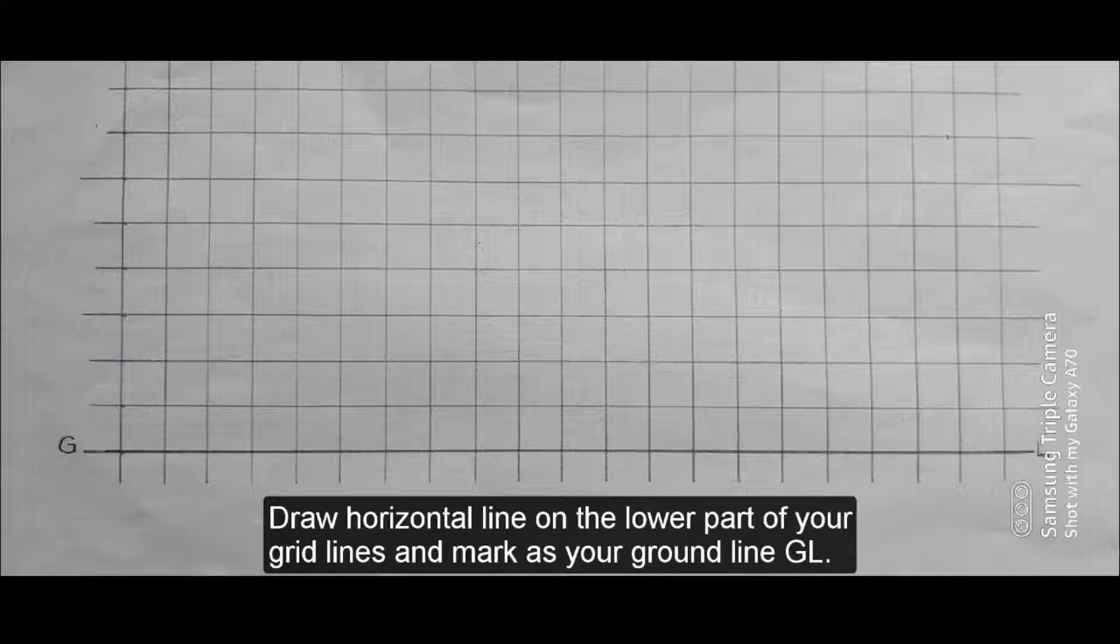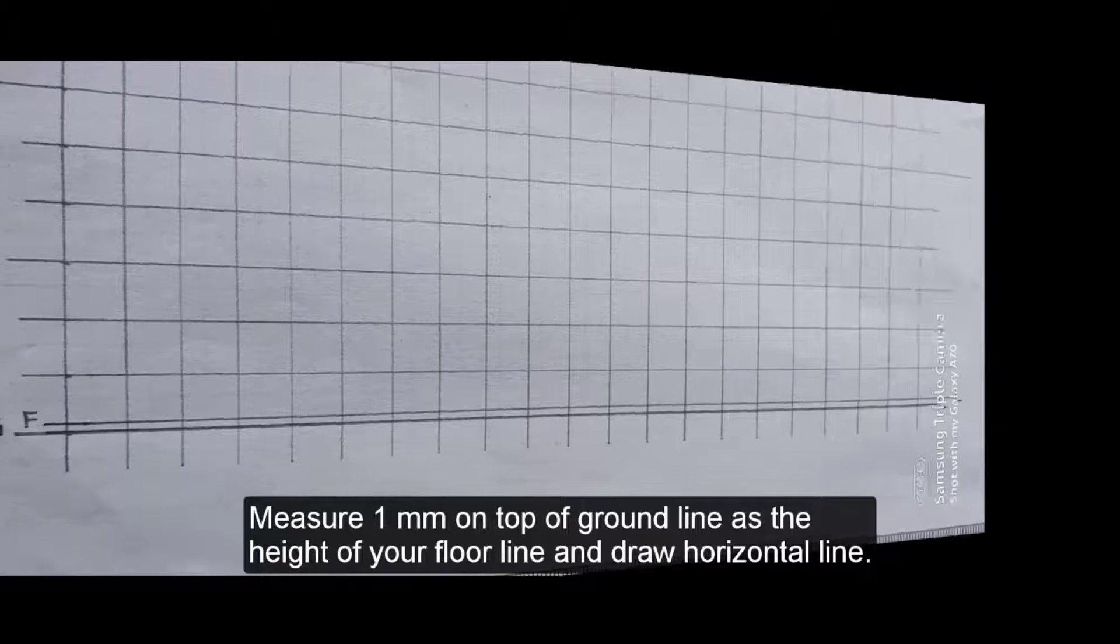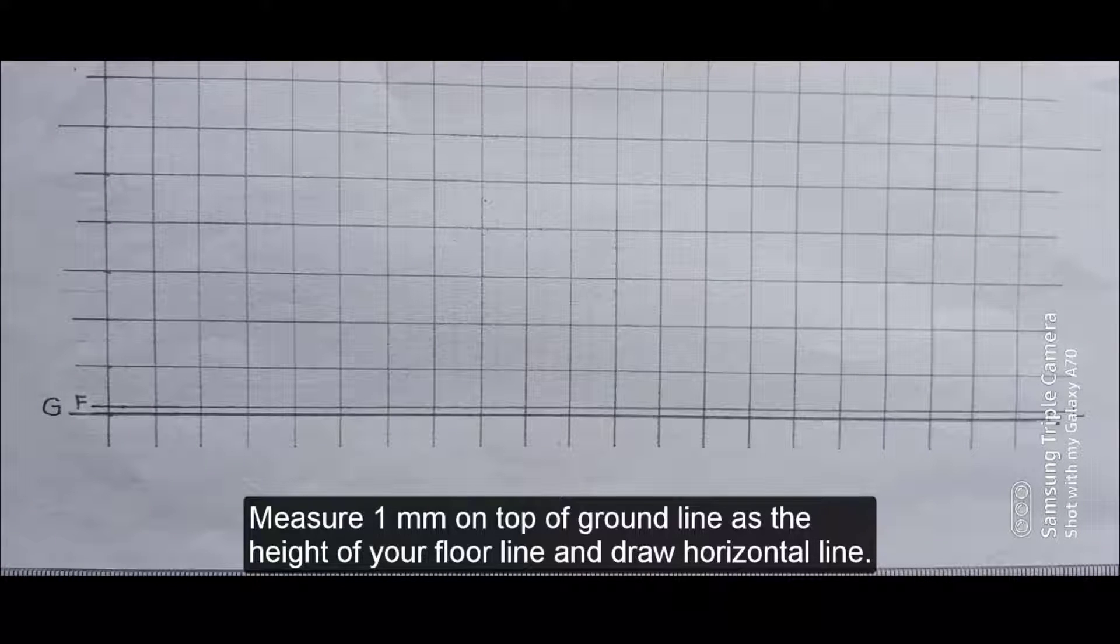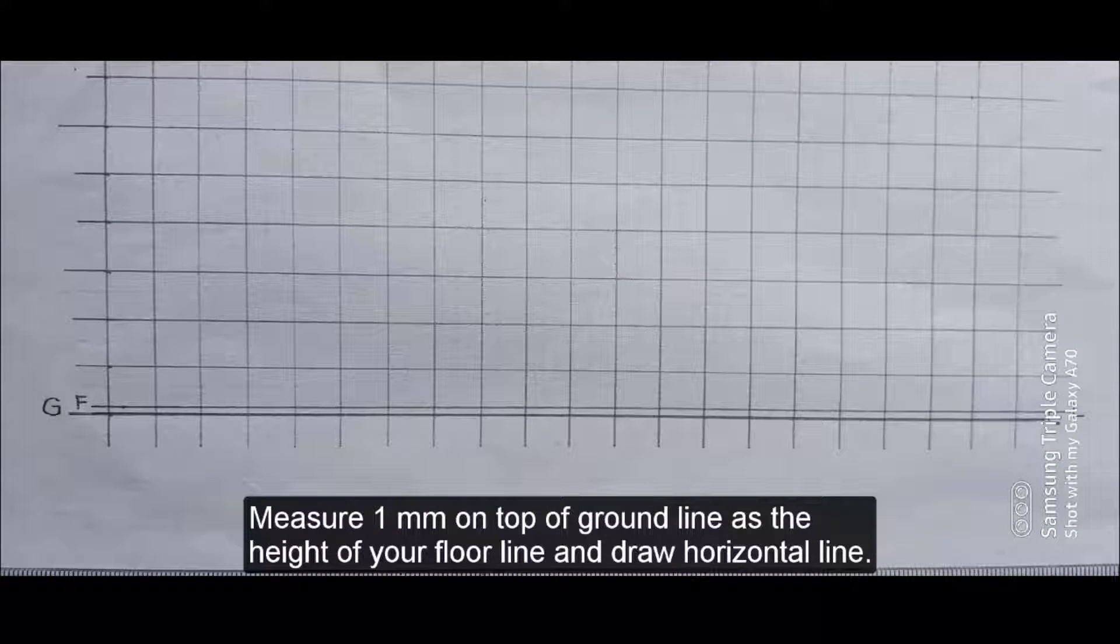Draw a horizontal line at the lower part of your grid lines and mark as your ground line GL. Measure 1 mm on top of ground line as the height of your floor line and draw a horizontal line.